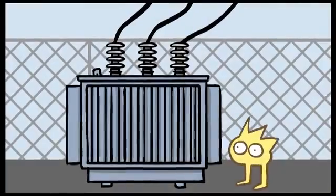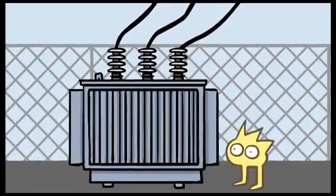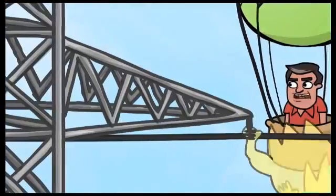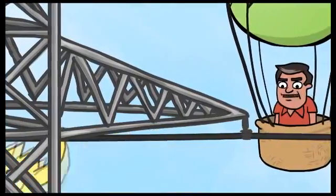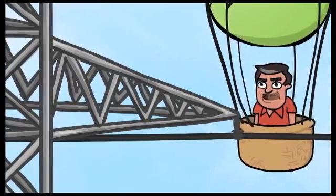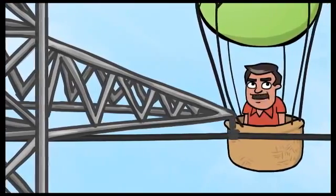For electricity to move through one of the four grids, its voltage must first be increased by a device called a transformer. Then the electricity can travel long distances across high voltage transmission lines. These high voltage lines are generally strung between giant metal towers. They stretch for miles from power plants to local substations in each neighborhood.